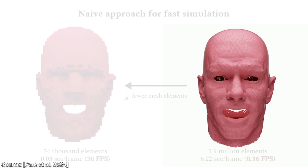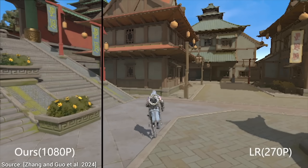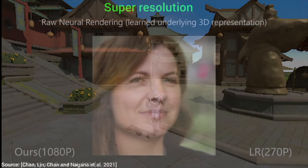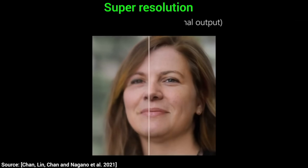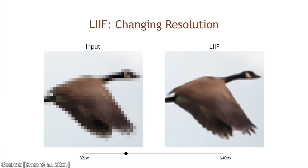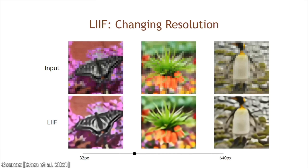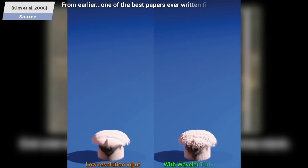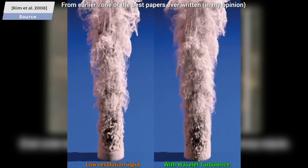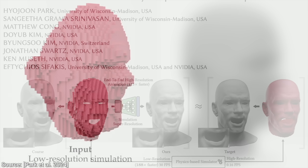But wait — remember those super-resolution techniques where in goes a coarse image and out comes a really detailed result? Synthesizing details with AI techniques is now possible. But this is for images, not for 3D models. Why not do super-resolution, but in 3D? That is exactly what this paper does. This is super-resolution for simulations.